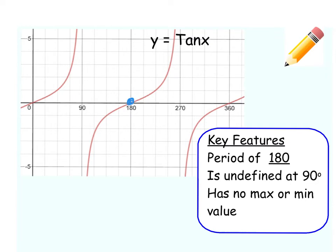The tan graph is undefined at 90 — there is no value at 90, because the graph just keeps going up and up, edging ever closer but never quite reaching 90. The curve below also keeps getting closer but never reaches 90. Because it keeps going up and down without limit, it has no maximum or minimum value. If you go to your calculator and type in tan 90, it'll come up as error — that's why. The tan graph never reaches 90 or 270.